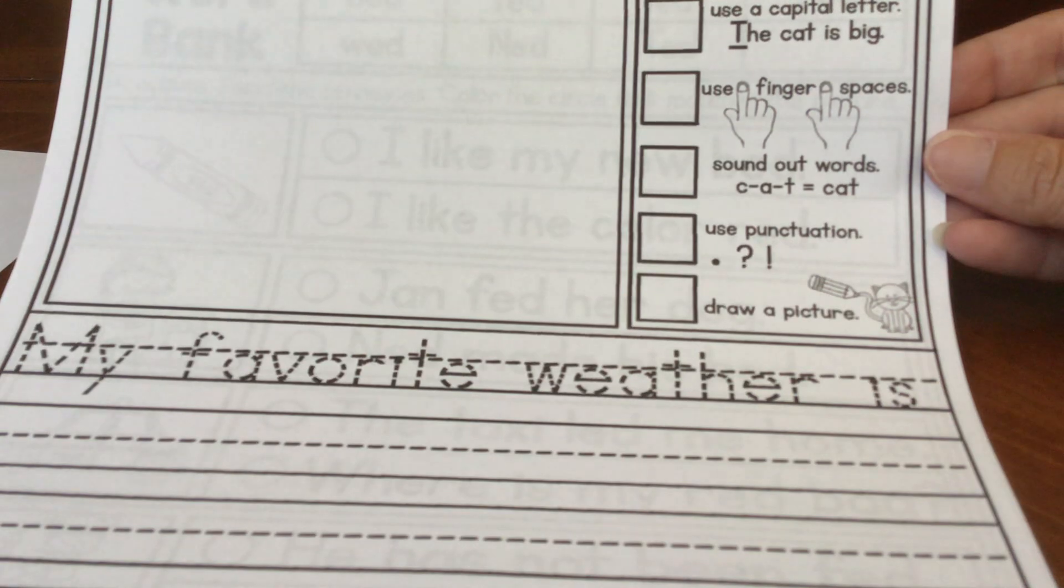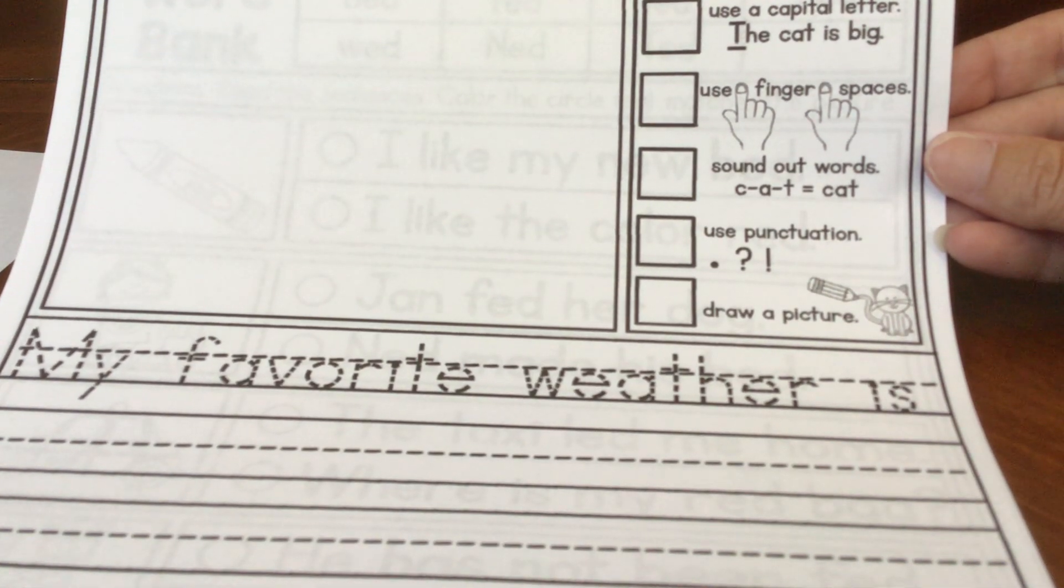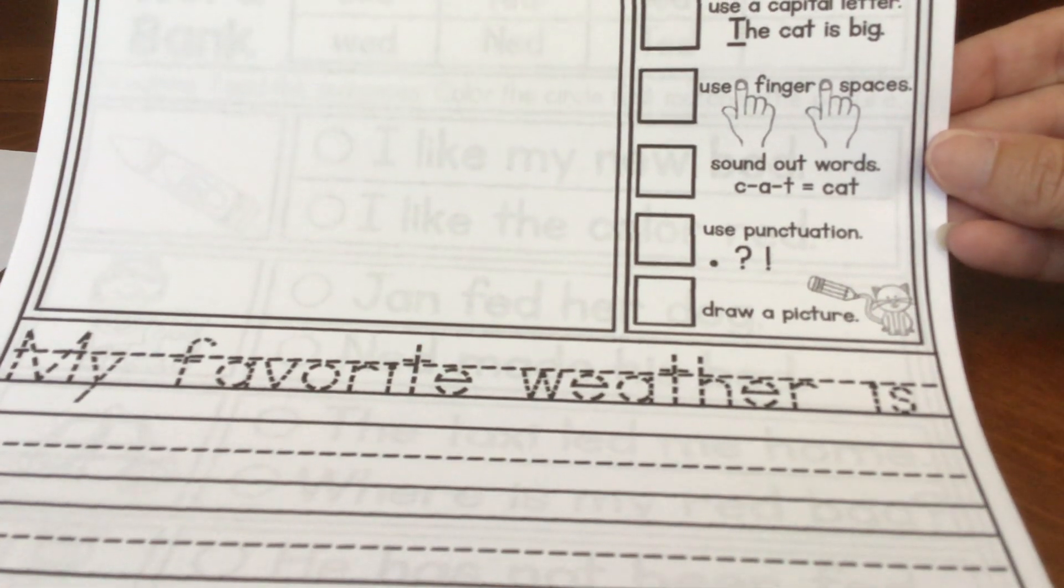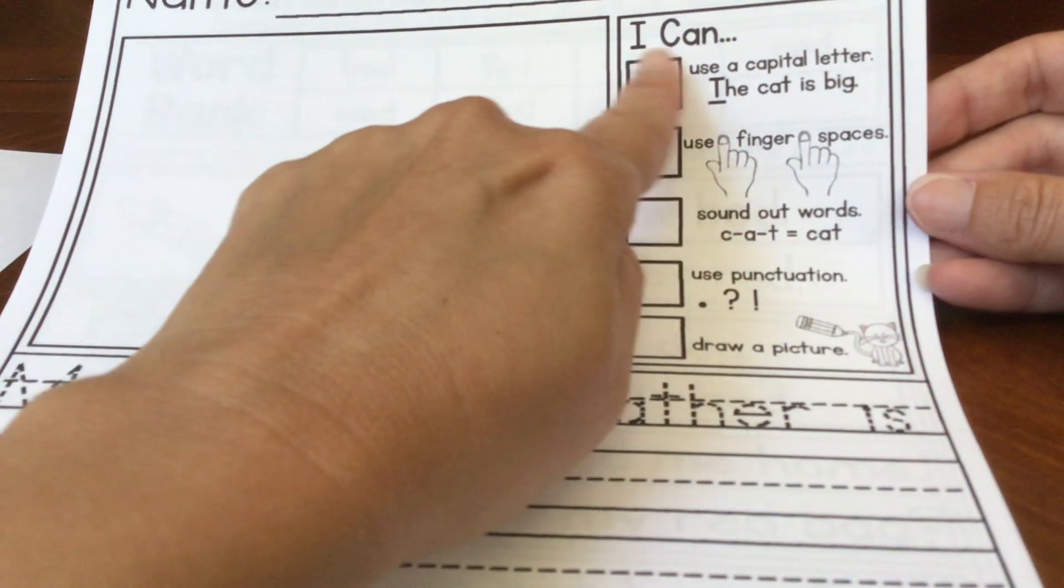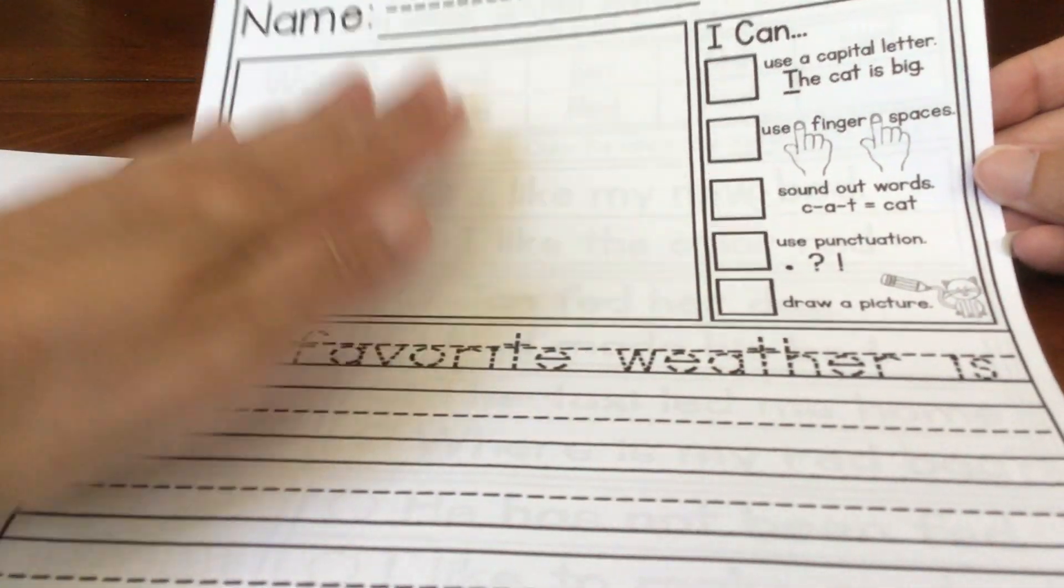I can use punctuation. Periods, question marks, and exclamation marks to help us know what you're thinking. Periods are telling, question marks are asking, and an exclamation mark shows excitement. And then I can draw a picture. So whatever you write about, you're going to draw a picture to match.